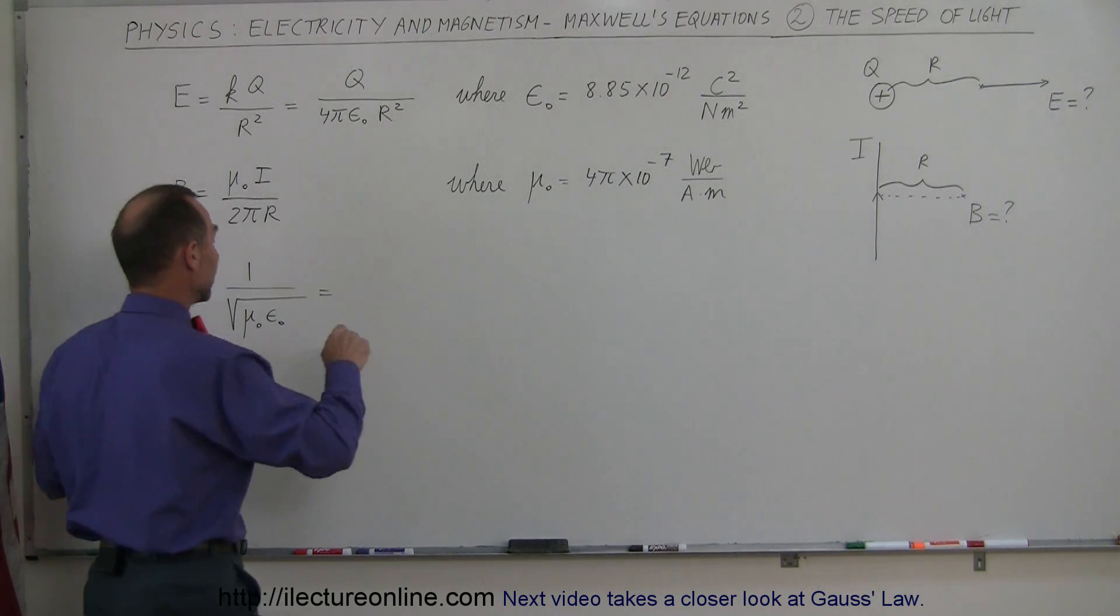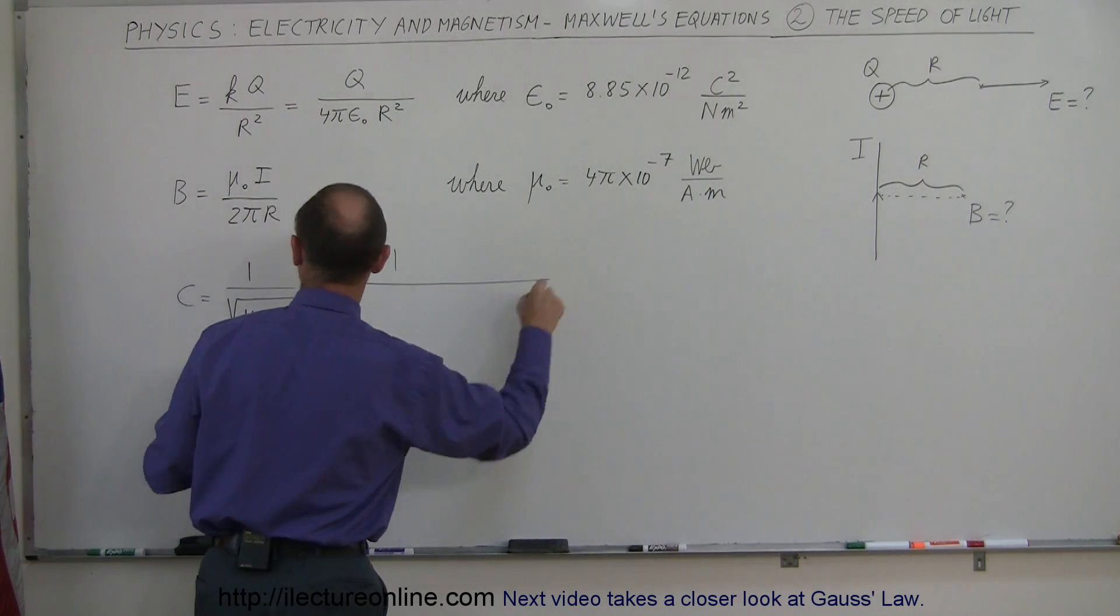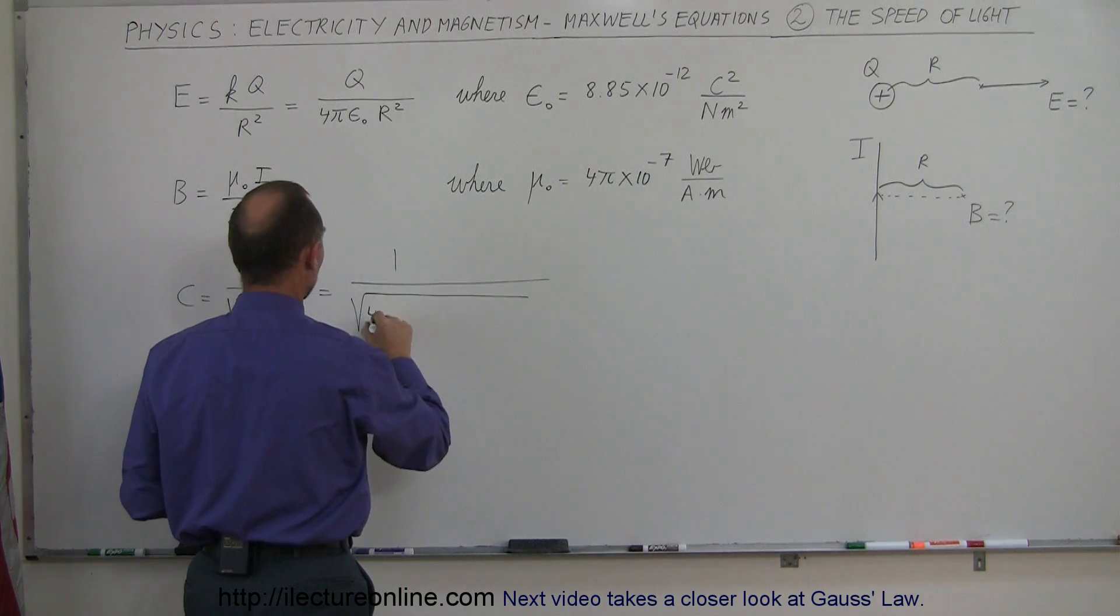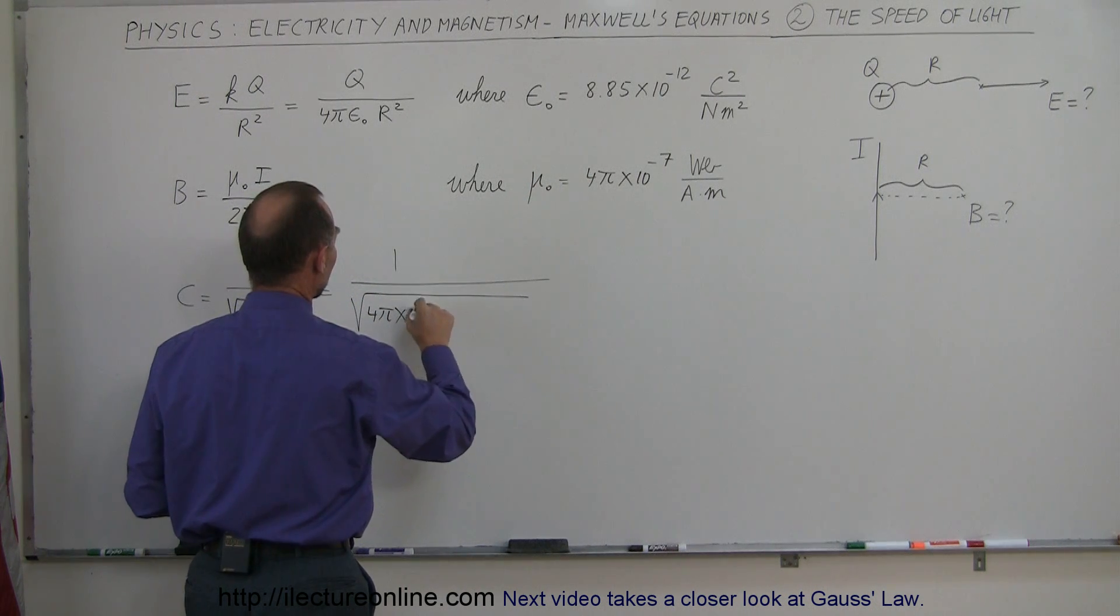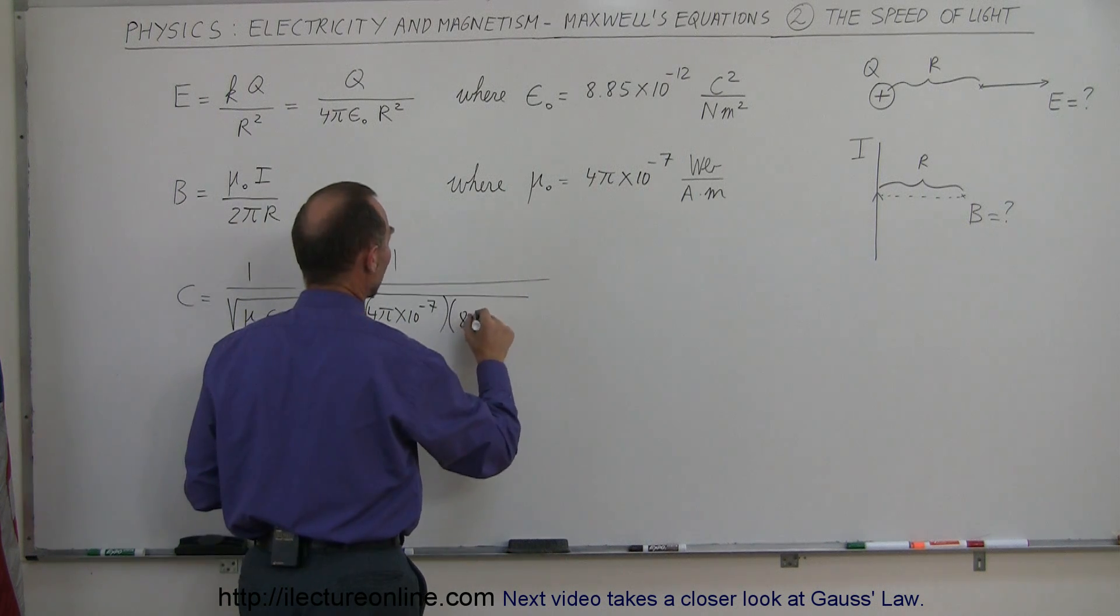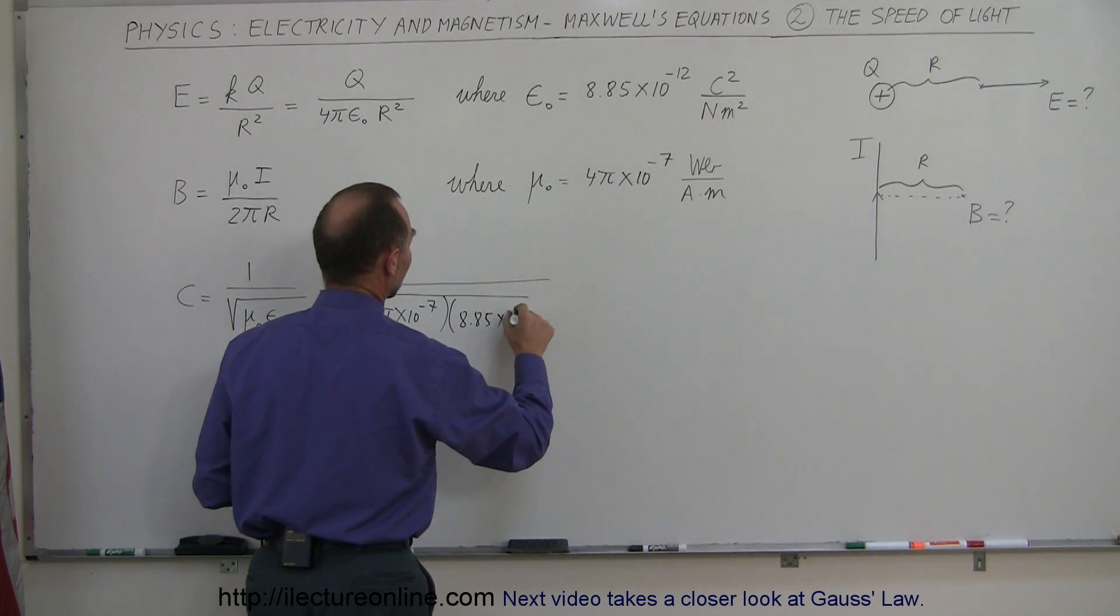And it's really interesting. If we throw numbers in there, so we get 1 over the square root of mu sub nought, which is 4π times 10 to the minus 7, and if we multiply that times epsilon sub nought, which is 8.85 times 10 to the minus 12.